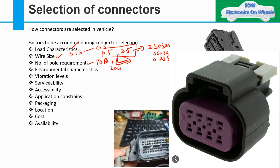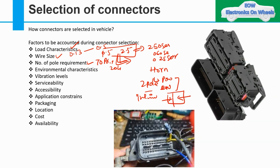The number of poles depends on the application. For example, a horn needs only two connections — one positive power supply and one negative ground — so only a two-pole connector is needed. For inline connectors passing through a firewall from body harness to dash harness, you check all the wires passing through and how many are required from one end to the other, then specify the number of poles for that inline connector.